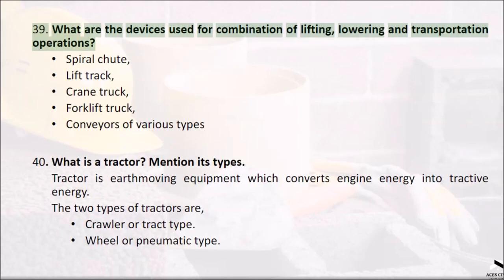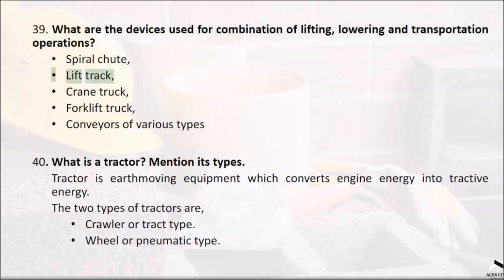Question 39: What are the devices used for combination of lifting, lowering, and transportation operations? Spiral chute, lift track, crane truck, forklift truck, and conveyors of various types.